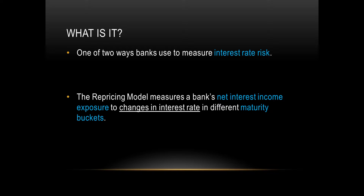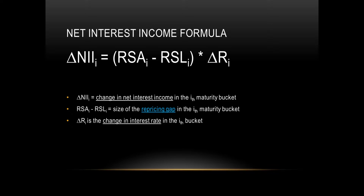A few key words here. When we say maturity buckets, we just mean we choose different time frames or planning horizons to measure these exposures — like every year, every quarter, every month, or even every 10 years. Banks will decide the optimal maturity bucket to use. Here's the formula for net interest income: delta NII equals RSA minus RSL times delta R. NII is net interest income, so we're finding the change in net interest income. RSA minus RSL is the size of the repricing gap, and delta R is your change in interest rate.